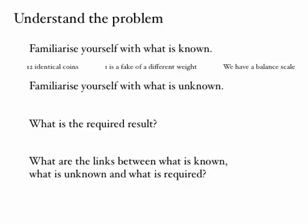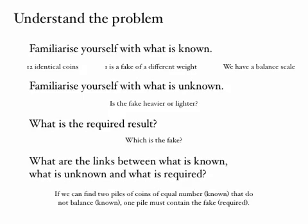In the case of the fake coin problem, we know that we have 12 coins that appear identical. One of them is a fake and is a different weight to the other 11. We also have a balanced scale and we know how it works. What's unknown? We don't know if the fake is heavier or lighter. What's the required result? We want to know which one is the fake. The link between the known, the unknown, and the required helps us: if we find two equal piles of coins that do not balance, those piles must contain the fake — and that's what we're looking for.